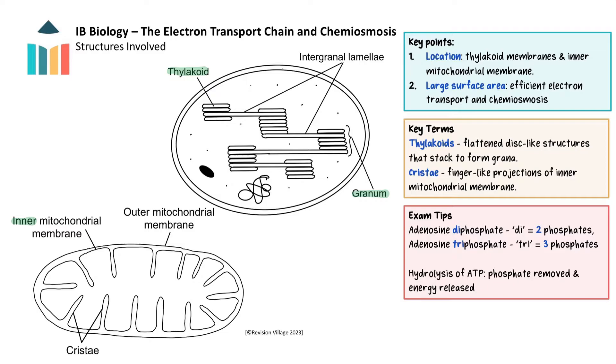In mitochondria, the inner membrane is folded inwards to form finger-like projections called cristae, as you can see here.